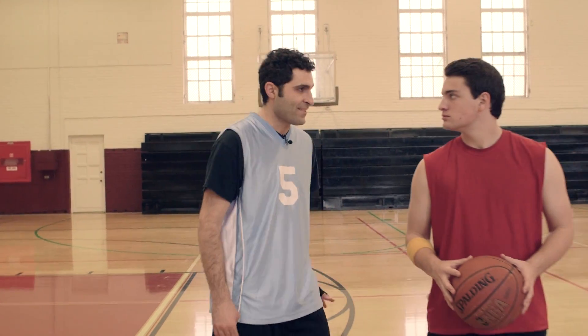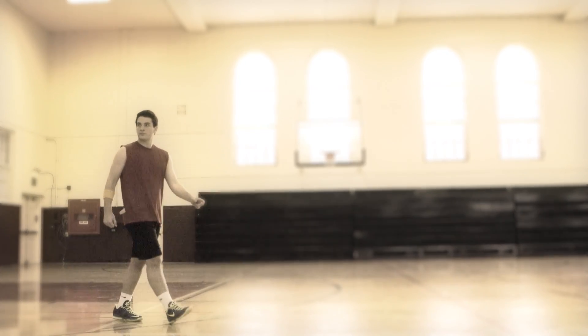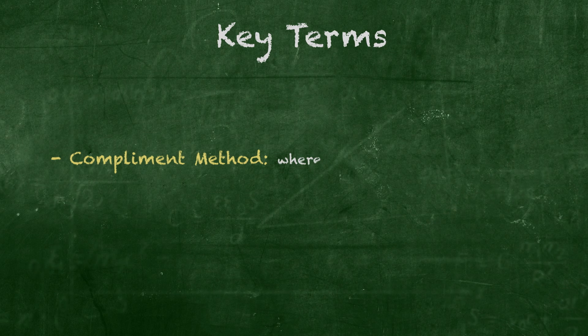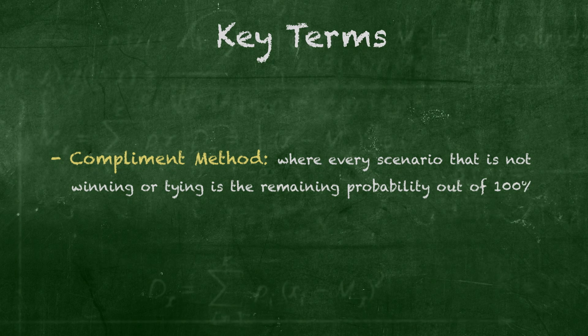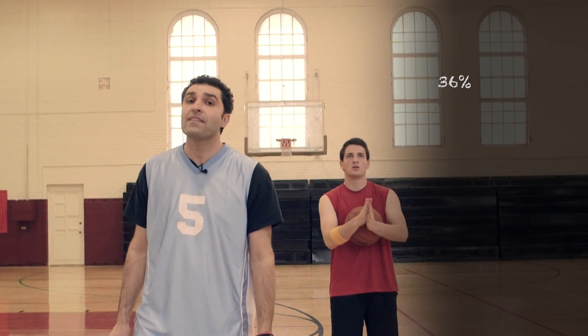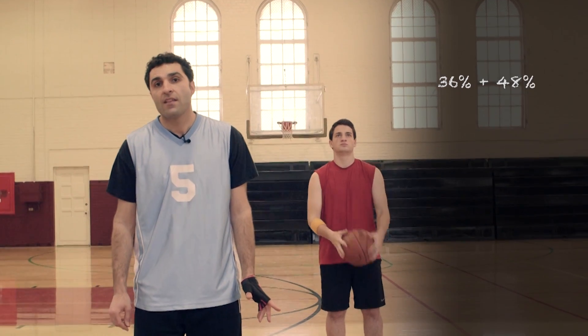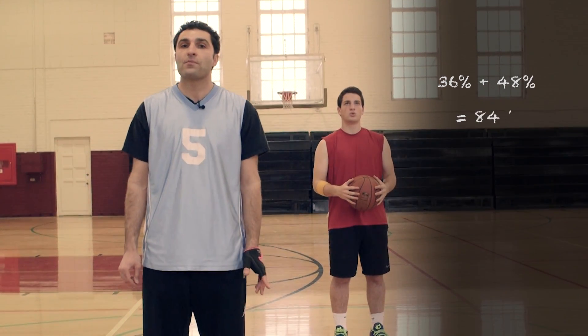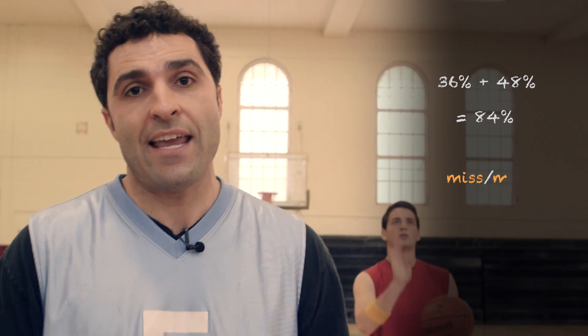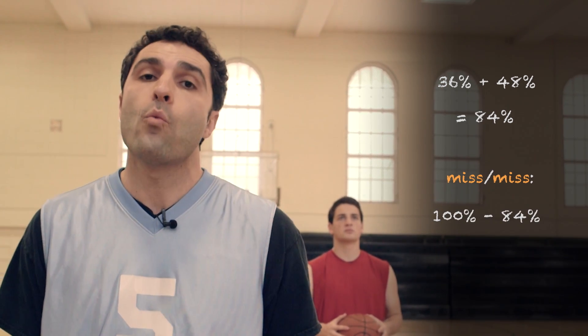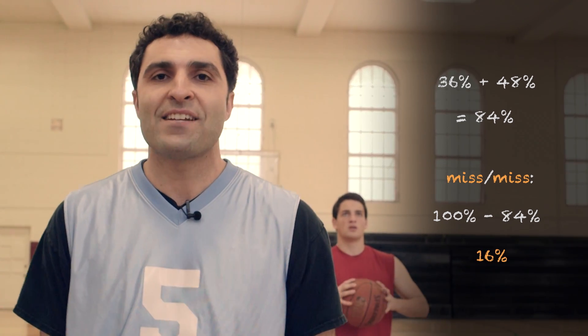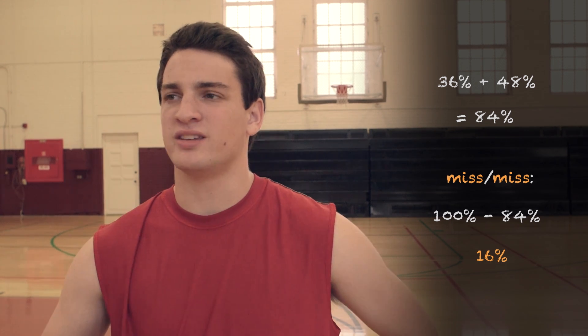Lastly, we come down to the least optimistic scenario: the dreaded miss, then miss. We can find the probability of missing both shots using what's called the complement method, where every scenario that's not winning or tying is the remaining probability out of 100%. We know from our previous calculations that the probability Jordan wins the game is 36%, and the probability of tying is 48%, thus the combined probability of winning or tying is 84%. Therefore, the probability that Jordan loses — that is, neither wins nor ties — is 100% minus 84%, or 1 minus 0.84, which is 0.16, or 16%.